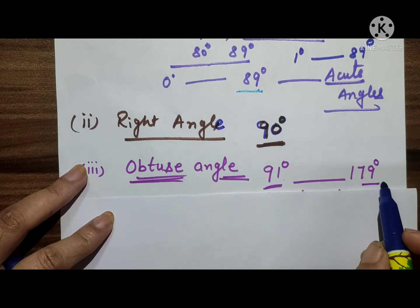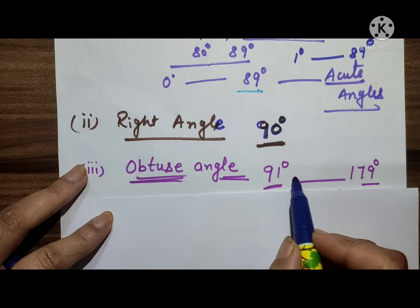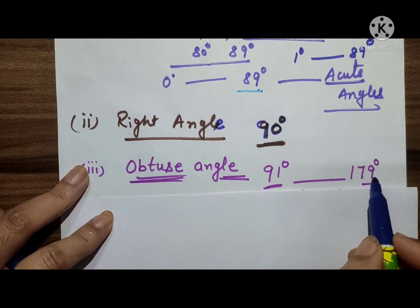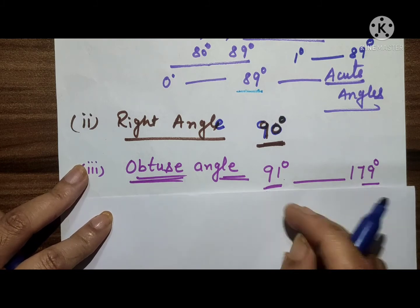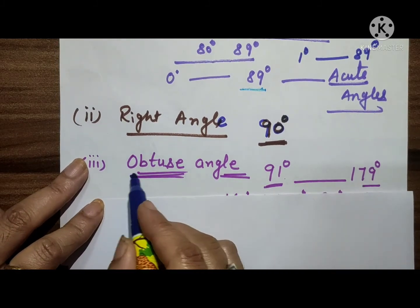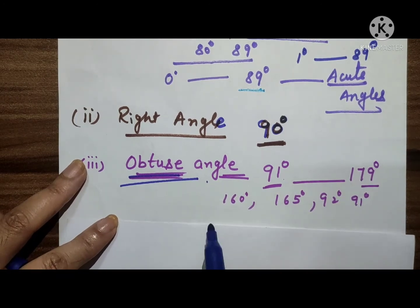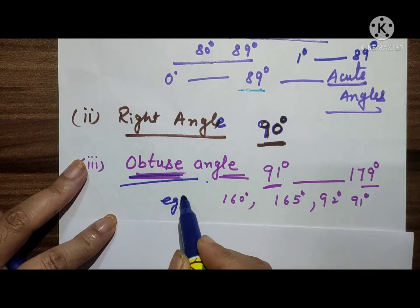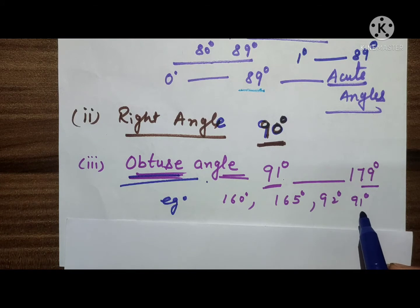Next is the obtuse angle. An angle whose measure is more than 90 degrees and less than 180 degrees — meaning any measure from 91 degrees to 179 degrees — all such angles are called obtuse angles. For example: 160°, 165°, 92°, 91°.